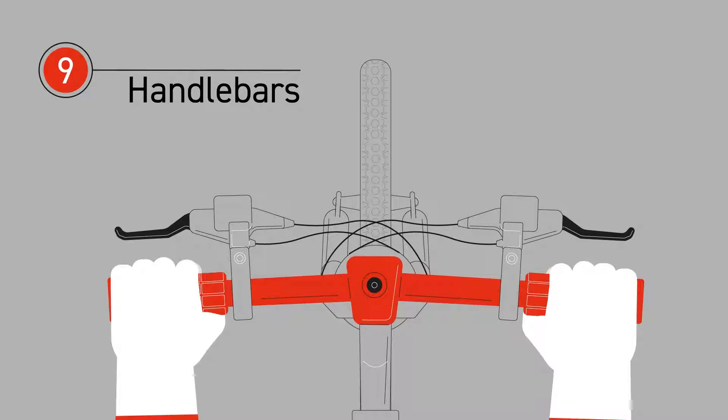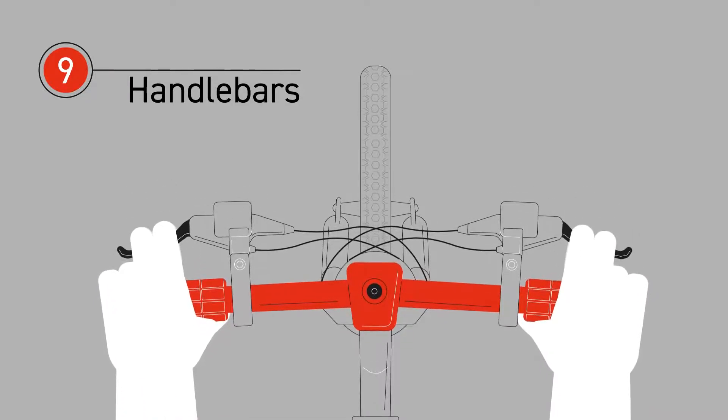Moving up to the handlebars, check they're tight to the stem and move in line with the wheels, and that your headset doesn't rock or sound gritty.